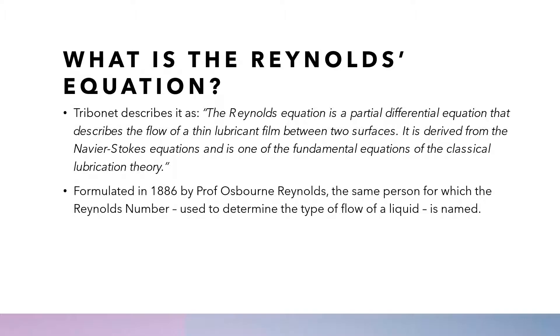It was formulated in 1886 by Professor Osborne Reynolds, the same person for which the Reynolds number, which is used to determine the type of flow of a liquid, is named.